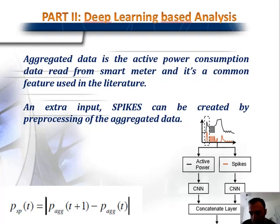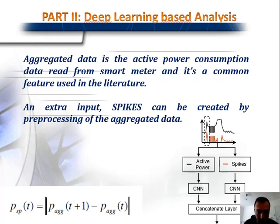An extra input called spikes can be created by preprocessing the aggregated data. We were inspired by audio tagging problems, where researchers read the original data, create special extra features, and prove that these extra features help deep learning models better understand the problem. So we created an extra feature called spikes — defined using the formula below as the energy consumption change, capturing increasing and decreasing edges. These two features — active power and spikes — are analyzed by the CNN layer, features are extracted, then concatenated and passed to the GRU layer.